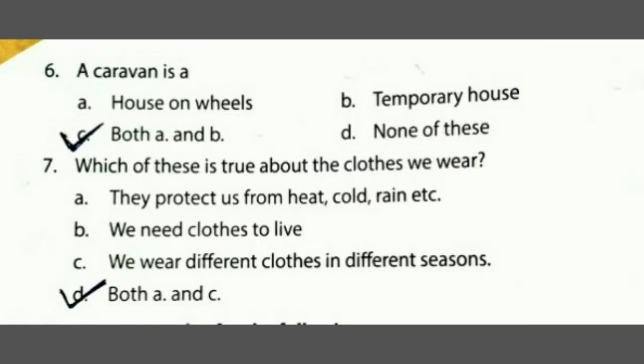Sixth MCQ: a caravan is — A. house on wheels, B. temporary house, C. both A and B, D. none of these. Caravan wheels के उपर का house है and also a temporary house, क्योंकि उसको जहाँ भी ले जाना है ले जा सकते हैं. So answer is C — both A and B.